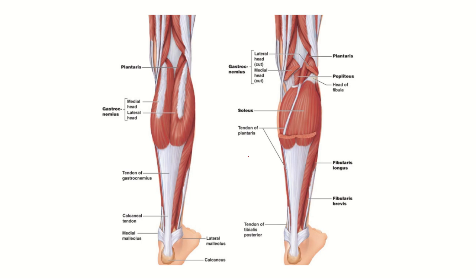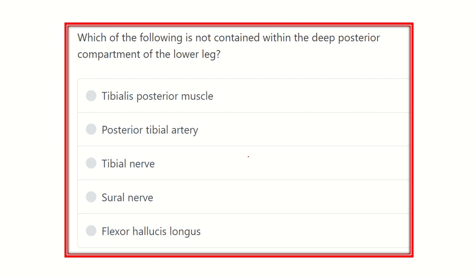Welcome to another question and answer session for MRCS exam. The question is: which of the following is NOT contained within the deep posterior compartment of the lower leg? The options are: tibialis posterior muscle, posterior tibial artery, tibial nerve, sural nerve, and flexor hallucis longus muscle.